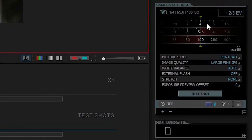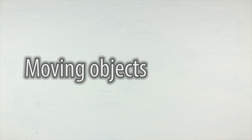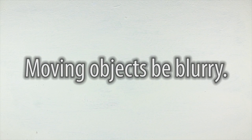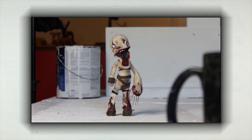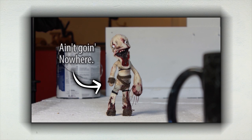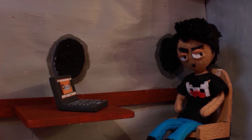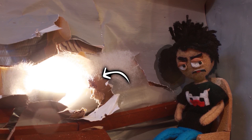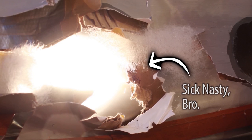The longer the shutter speed is, generally the brighter your image gets. However, if there are moving objects being captured, they tend to get blurred as their whole action in the fraction of time is captured. But unless you're using some kind of voodoo magic, these guys don't really move on their own, so that's not really a problem. You can even use that effect to your advantage to make super cool stuff — for example, that explosion is just me waving a flashlight around through the hole. It's pretty cool!